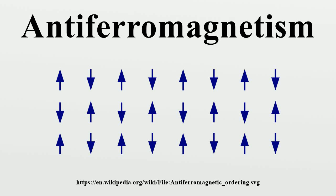In materials that exhibit antiferromagnetism, the magnetic moments of atoms or molecules, usually related to the spins of electrons, align in a regular pattern with neighboring spins pointing in opposite directions. This is, like ferromagnetism and ferrimagnetism, a manifestation of ordered magnetism.